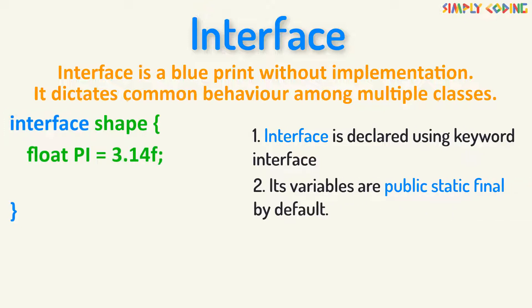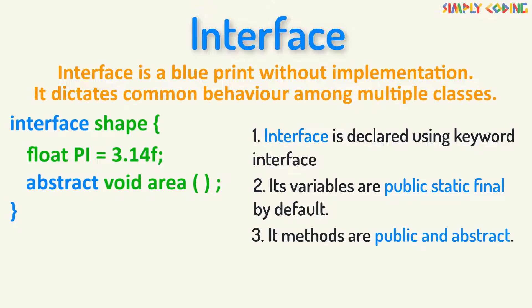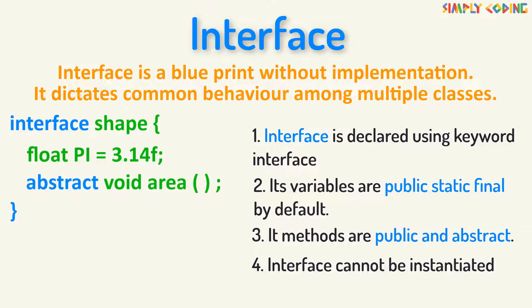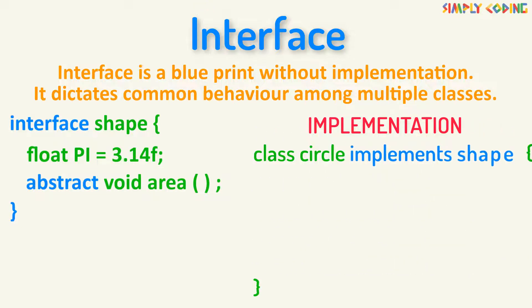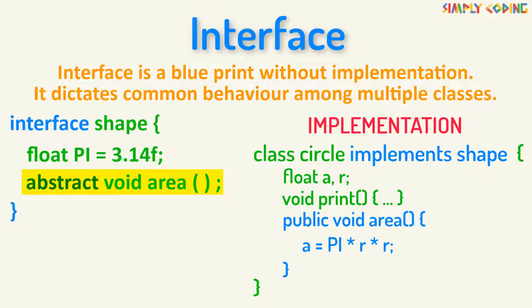All of its variables are public, static, and final by default, and its methods are public and abstract. Like an abstract class, an interface also cannot be instantiated. To implement an interface, we use the implements keyword. Implementing classes can then add their own member variables and methods. A class that implements an interface must implement all the methods declared in the interface.